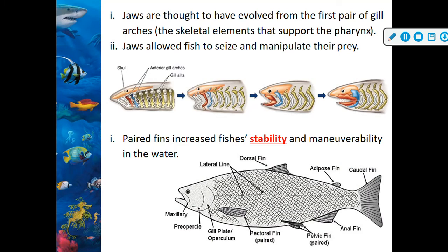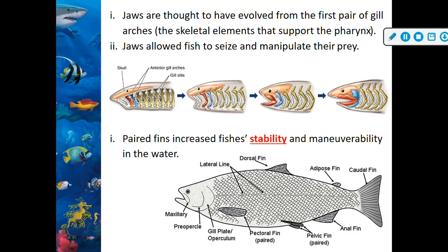Jaws are thought to have evolved from the first pair of gill arches — the skeletal elements that support the pharynx. Jaws allowed fish to seize and manipulate their prey. Paired fins increased fish stability and maneuverability in the water.